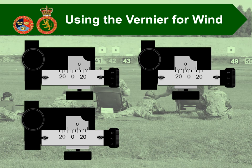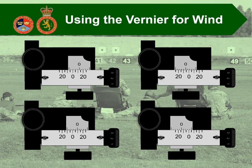For the third example, we have right wind on the sight. The zero is between the 5 and the 10, and counting the small graduations gives 4 minutes across — so 5 plus 4 is 9 minutes right wind. And for the final example, we have left wind again. In this example we are between 10 and 15, and it's the third graduation along — so that makes 13 minutes left wind.